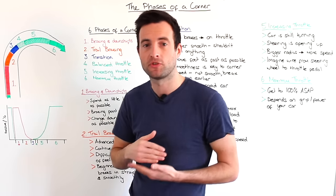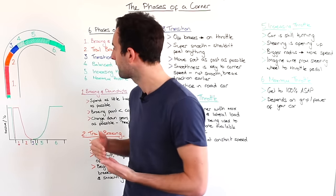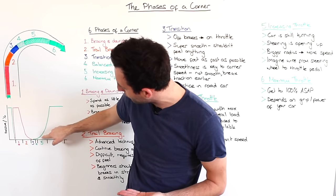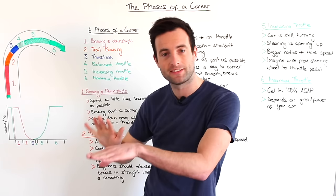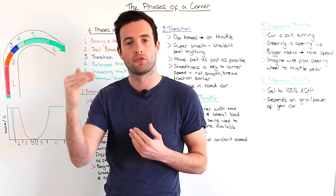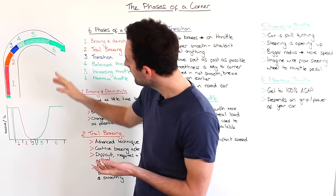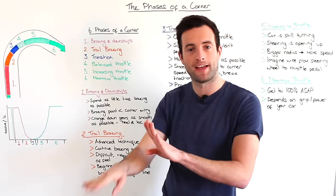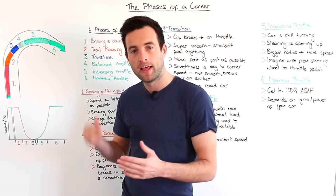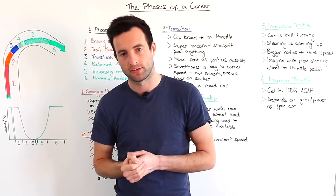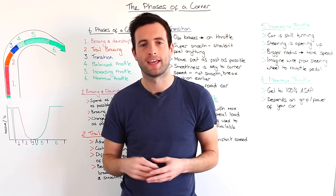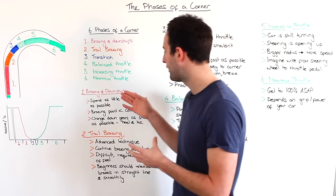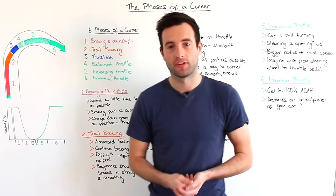We're not accelerating but just keeping a constant speed. Then we move to section five where the throttle position begins to accelerate up towards 100% throttle. And finally section six where we're 100% flat out on the accelerator pedal as we're heading down to the next corner. So now we're going to take a look at each phase in more detail, beginning with the braking and downshift section.